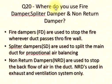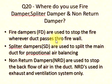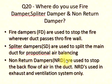Q20: Where do you use fire damper, splitter damper, and non-return damper? Fire dampers (FD) are used to stop the fire wherever a duct passes through a fire wall. Splitter dampers (SD) are used to split the main duct for proportional air balancing. Non-return dampers (NRD) are used to stop the back flow of air in the duct. NRDs are used in exhaust and ventilation systems only.